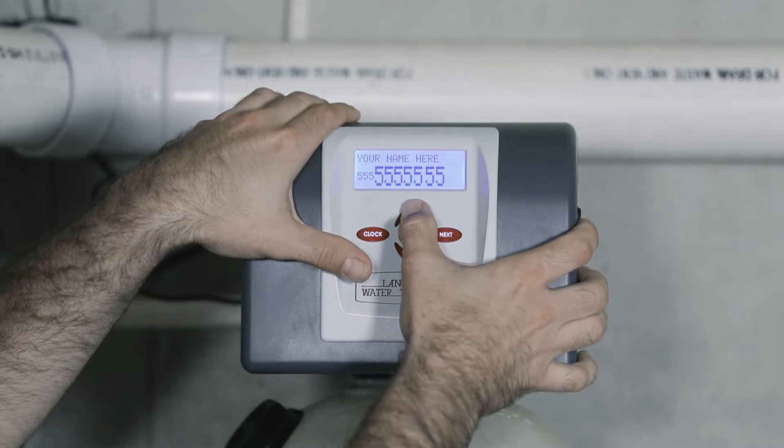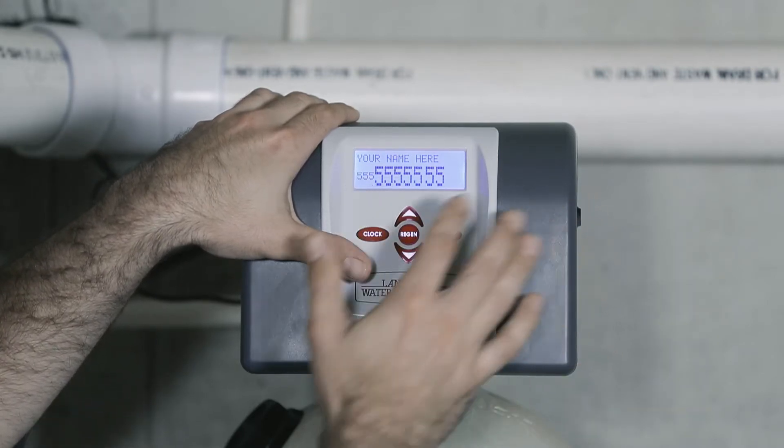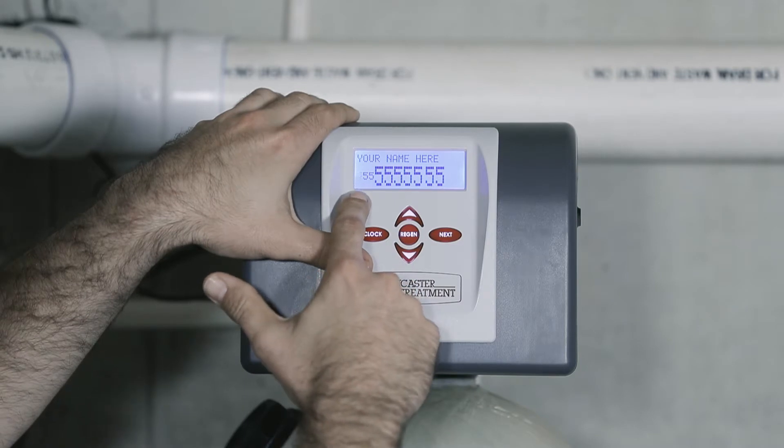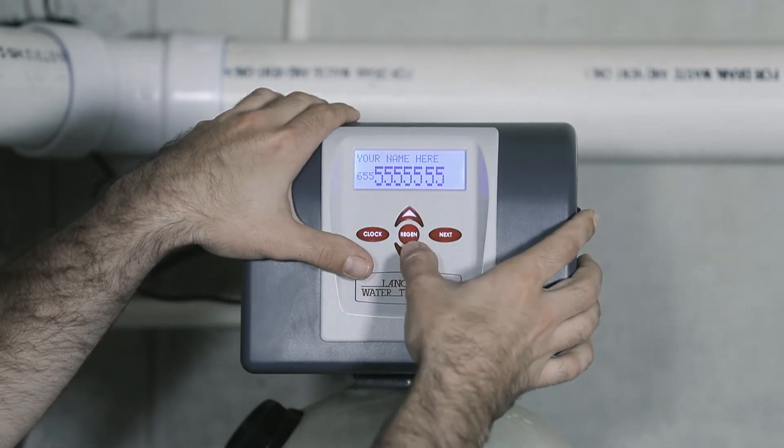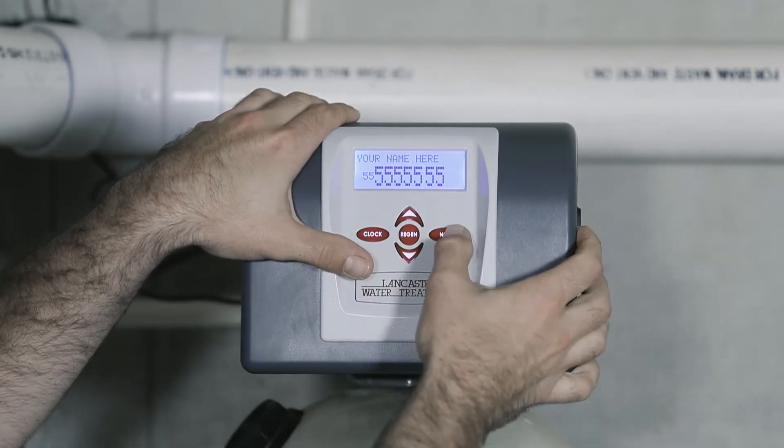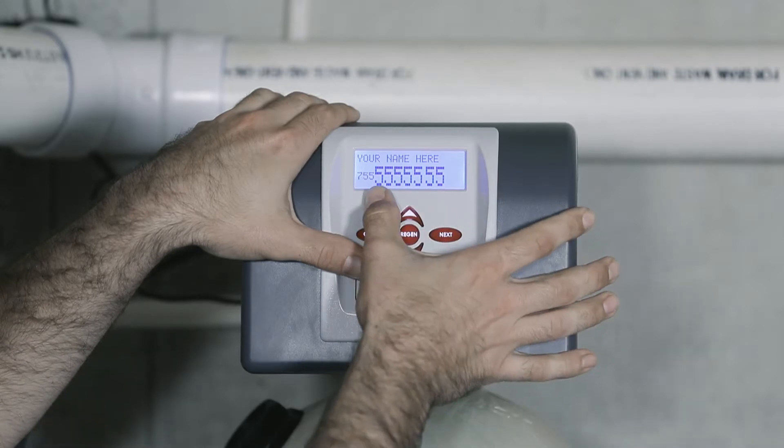Use the up and down arrows to change the first number for the area code. Once that number is selected, press next and it goes to the next number.